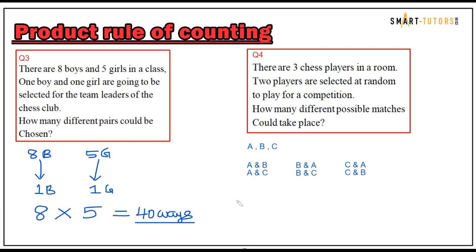Question number four has been prepared purposely to explain the difference between when you need to divide and when you don't. There are three chess players in a room; two players are selected at random to play in a competition. How many different possible matches could take place?